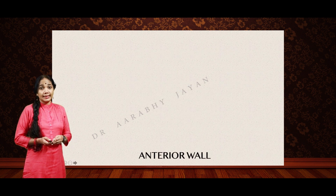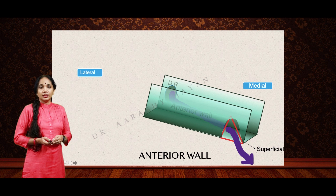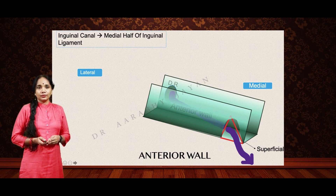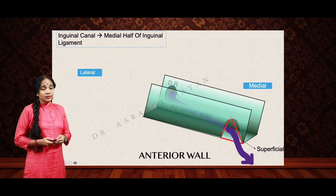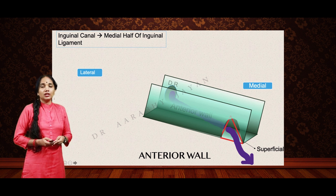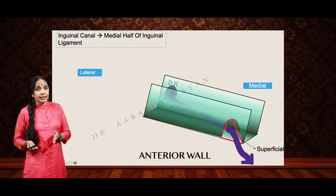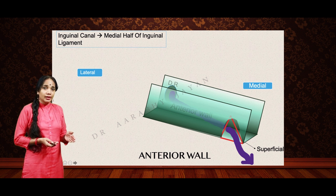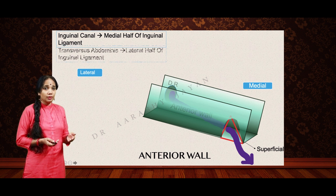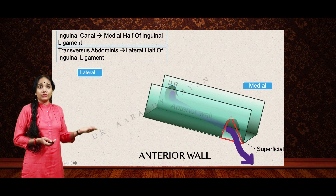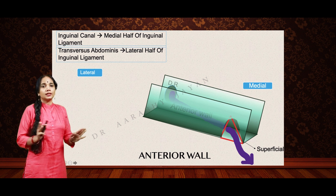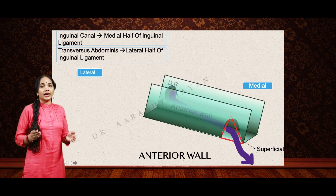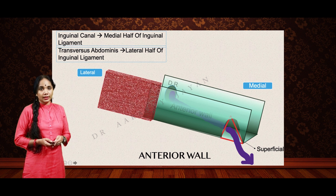Now what forms the anterior wall? Two things to remember — please refer to my first video on the relations of the anterior abdominal wall muscles to the inguinal canal. The inguinal canal lies in the middle half of the inguinal ligament. The transverse abdominus is attached to the lateral half of the inguinal ligament, so it is not directly related to the anterior wall of the inguinal canal.